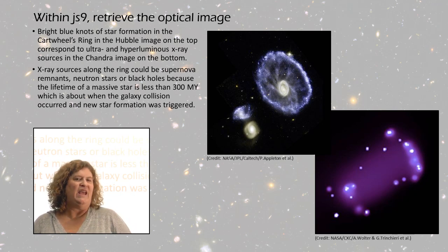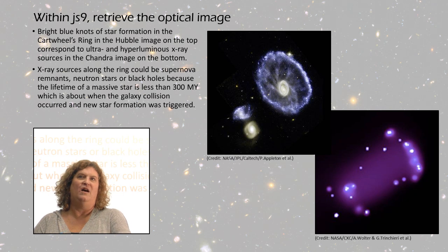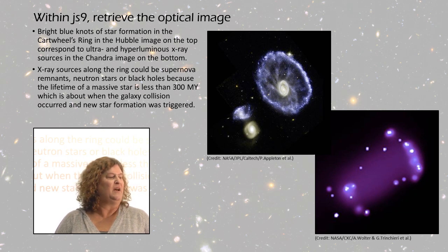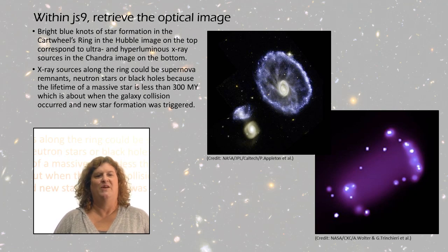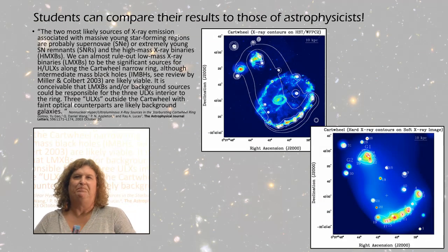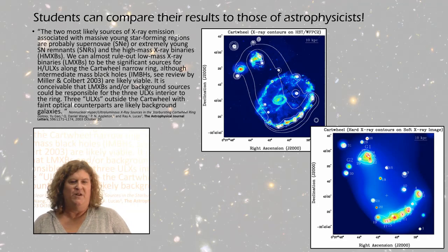Using the age of the collision, 300 million years, those x-ray sources could be things like supernova remnants, black holes, or neutron stars, because the lifetime of a massive star is less than 300 million years, which is when the new star formation started to happen.